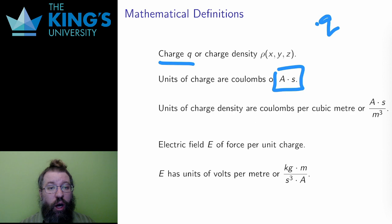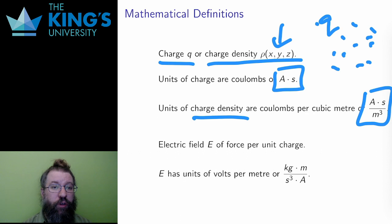In addition to point charges, often there is a distribution of charge in a region, and this can be called a charge density, which is a scalar field ρ. Charge density has units of coulombs per cubic meter, C/m³, or amp seconds per cubic meter, A·s/m³.